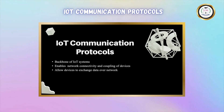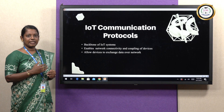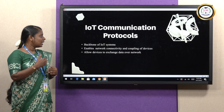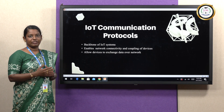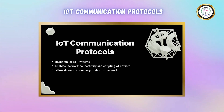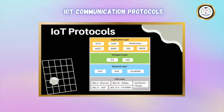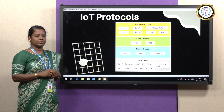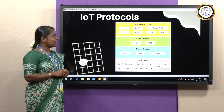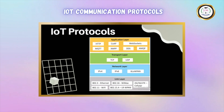These communication protocols are the backbone of the IoT systems and enable network connectivity and coupling of devices. This allows communication and data exchange between devices through the network. In the seven OSI layers, we have IoT Communication Protocols in the Application Layer, Transport Layer, and Network and Link Layer.